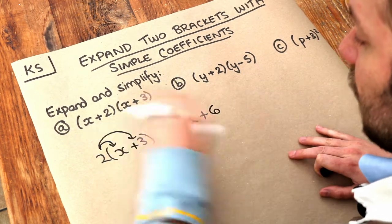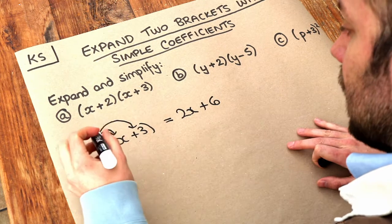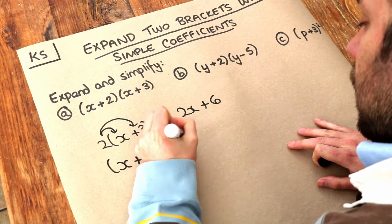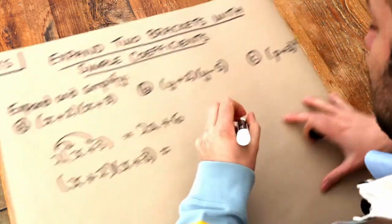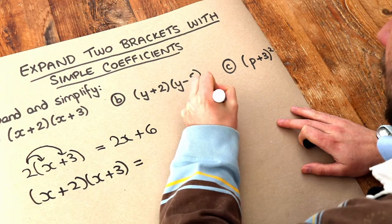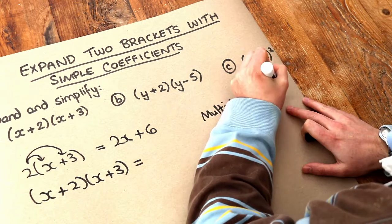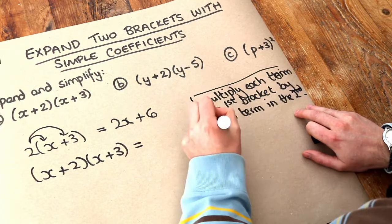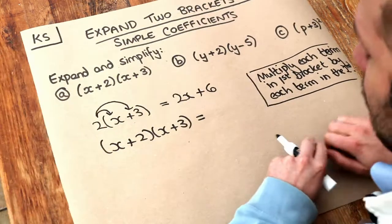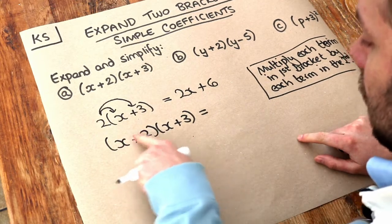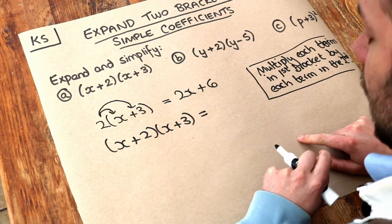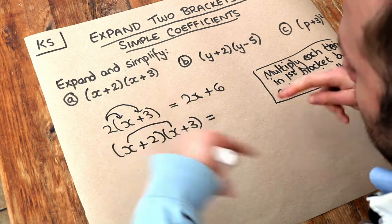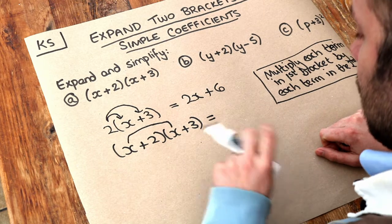Now when you have two brackets like this, it's a bit more complicated. Basically the strategy is this: we multiply each term in the first bracket by each term in the second. And that is the one point you need to know for this video. So we're going to multiply each thing in the first bracket by each thing in the second bracket, thinking of all the different combinations.